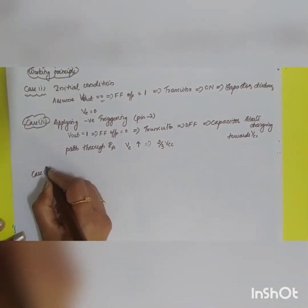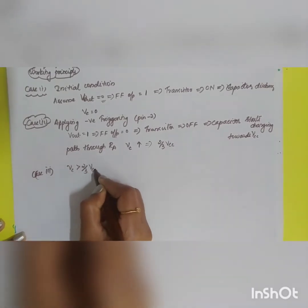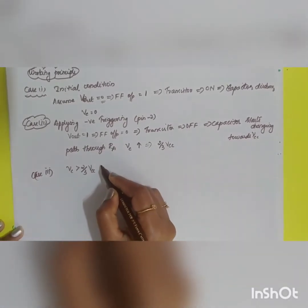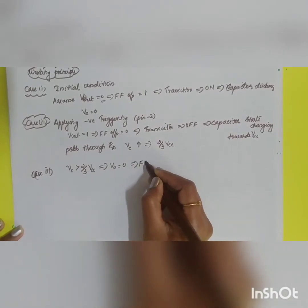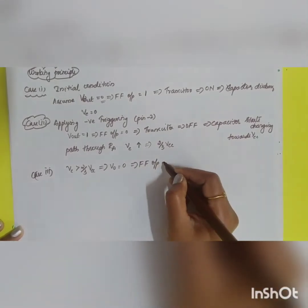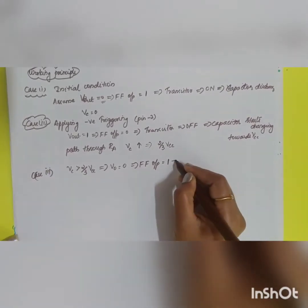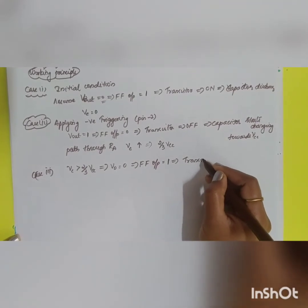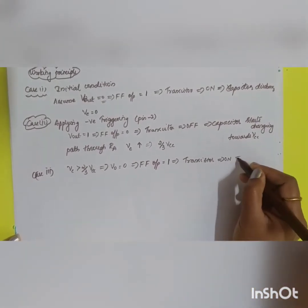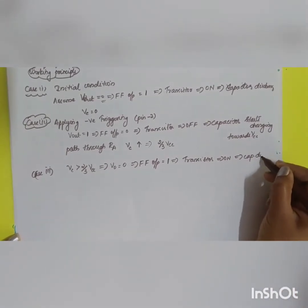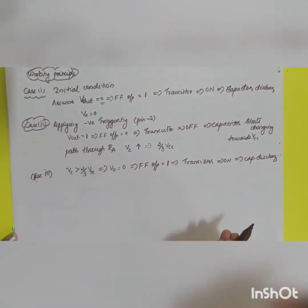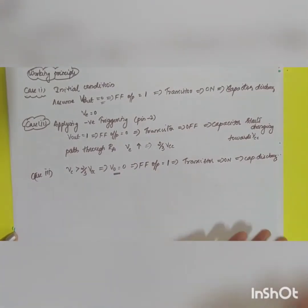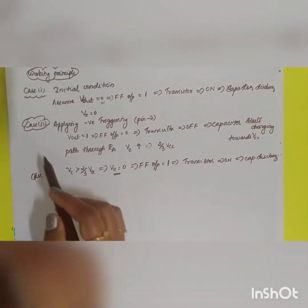Case 3: Once the capacitor voltage exceeds 2/3 VCC, S = 1, so Vout returns to 0. The flip flop output Q becomes 1, the transistor turns ON again, and the capacitor discharges. The output returns to the permanent low state. Vout = 0 in the permanent state until another triggering pulse is applied.